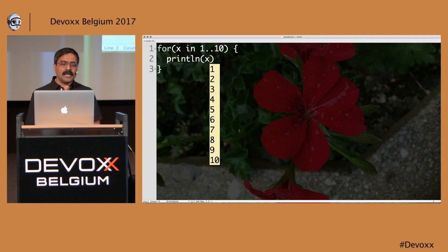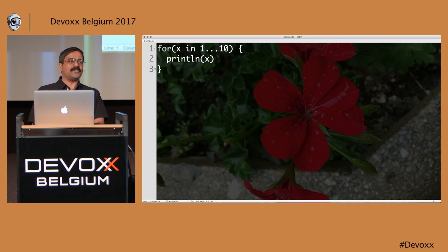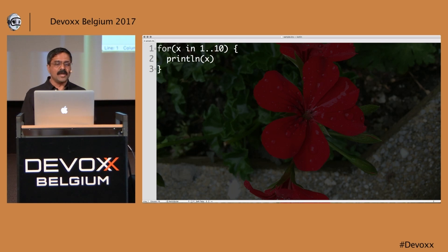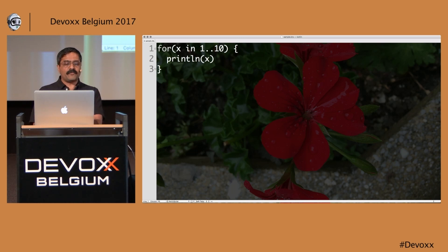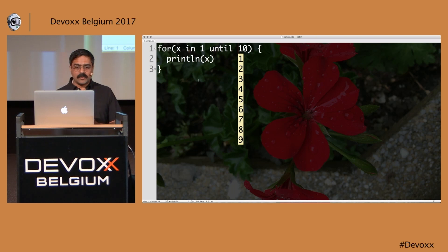I write 'for (x in 1..10)' and then print the value of x. Keep in mind that this includes the value 10 — that's inclusive. This is something I learned in Ruby and really like. But Kotlin also provides 'until' — so 'for (x in 1 until 10)' does not include 10. If it's not inclusive, use until; if it's inclusive, use the two-dot range syntax.